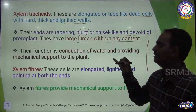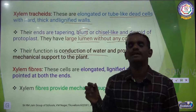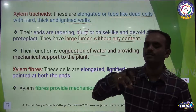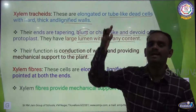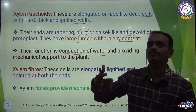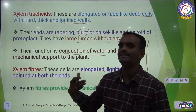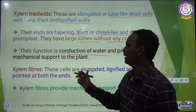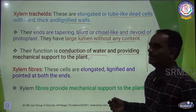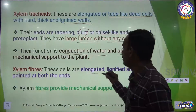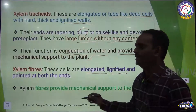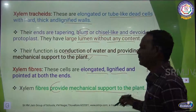The function of tracheids is conduction of water and providing mechanical support to the plant body. The second component is xylem fibers. These cells are elongated, lignified, and pointed at both ends. Xylem fibers also provide mechanical support to the plant body.